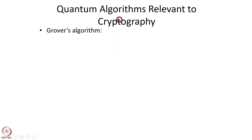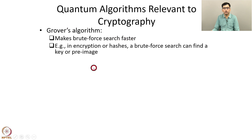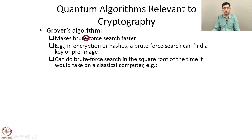Now let us discuss some quantum algorithms that are relevant to cryptography. One is Grover's algorithm and the other is Shor's algorithm. Grover's algorithm makes brute-force search faster. For example, if you want to find the key that converts a particular piece of plain text to a particular piece of ciphertext, a brute-force search can be used to find the key. In the case of a cryptographic hash function, a brute-force search can find a particular input for which the hash value is a particular output — that is, a brute-force search can find a pre-image for a cryptographic hash function. Grover's algorithm can do brute-force search in the square root of the time it would take on a classical computer.